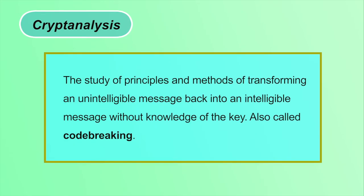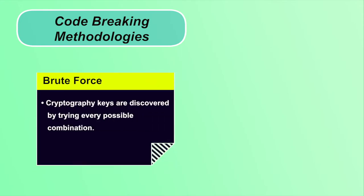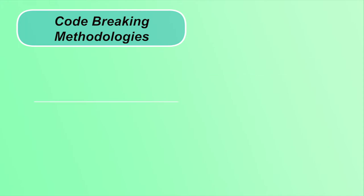Cryptanalysis is the process of transforming non-readable form of a message to readable form without knowledge of the key, using different code-breaking methodologies. It is also known as code breaking. One can measure the strength of an encryption algorithm using various techniques. The first is brute force attack — the attacker tries all possible combinations to discover the cryptographic key. In frequency analysis, the attacker finds the occurrence of letters in ciphertext to discover the plaintext, based on the fact that certain letters occur with varying frequencies in any language.